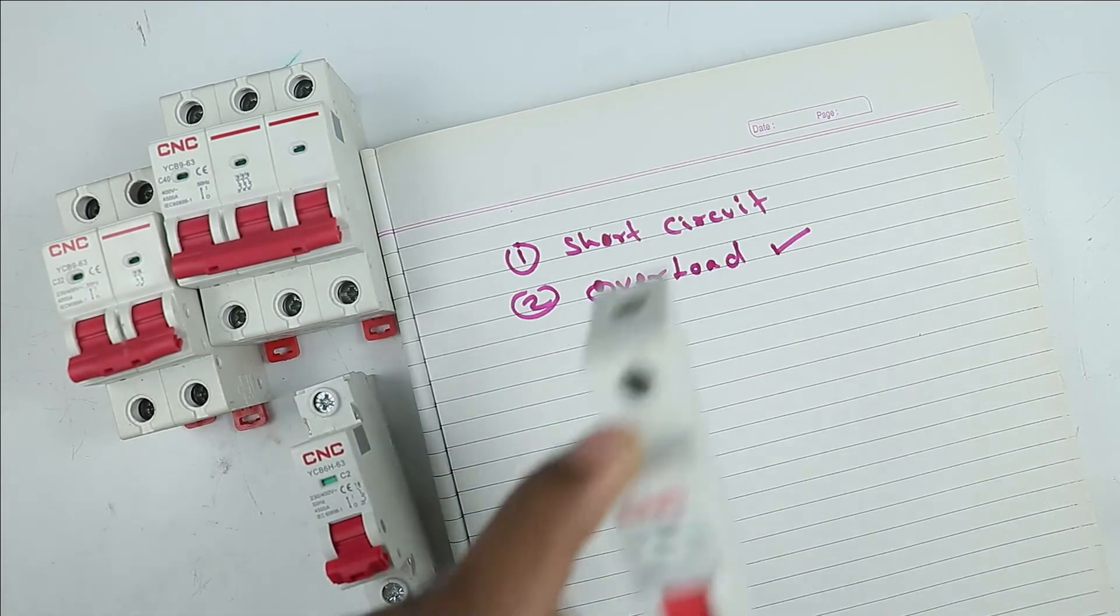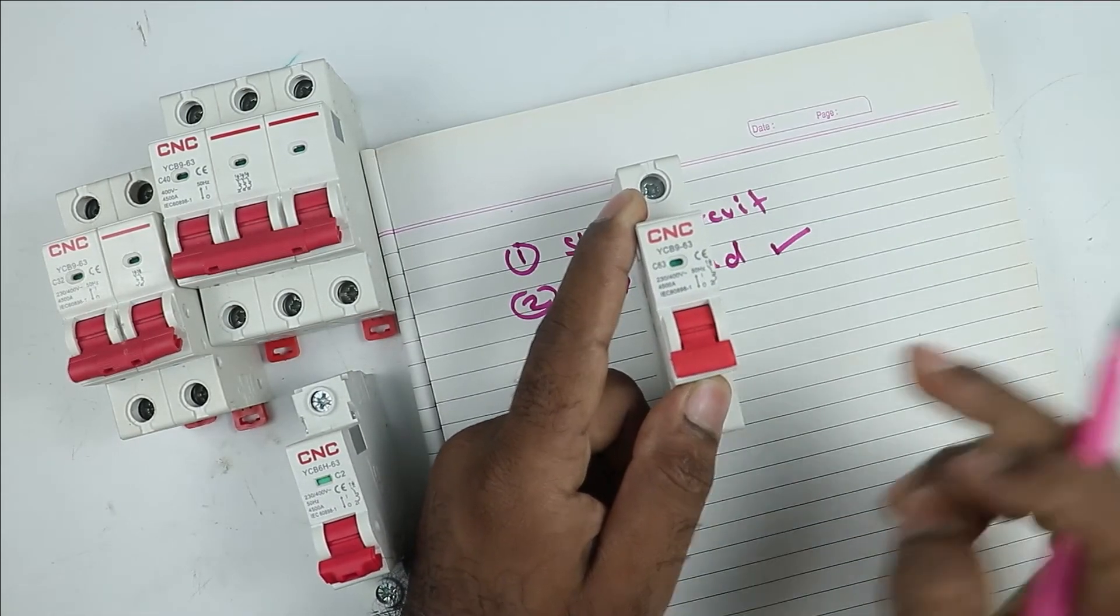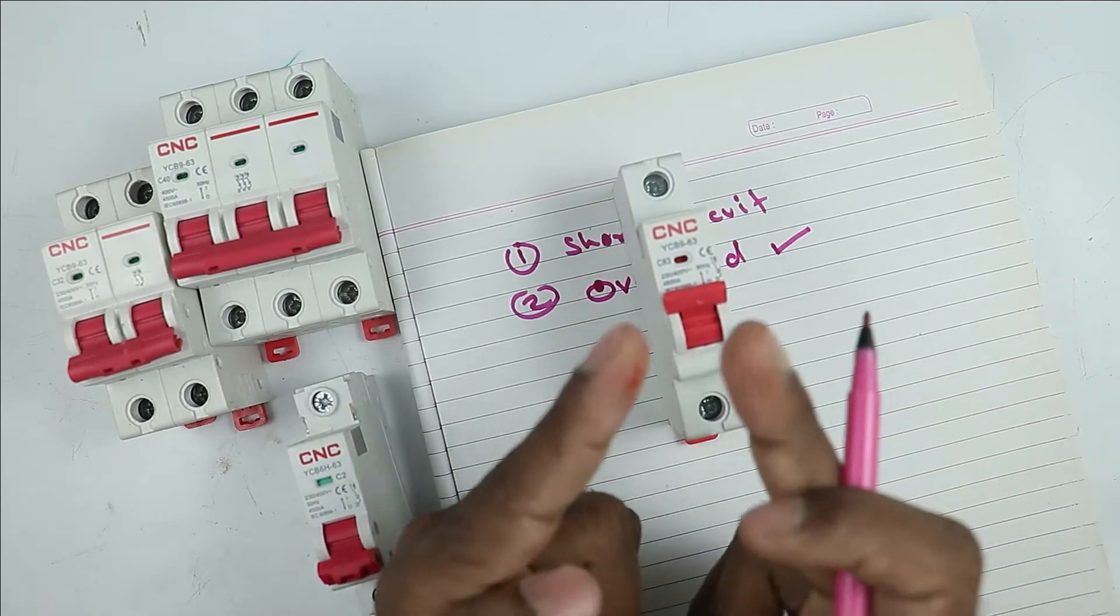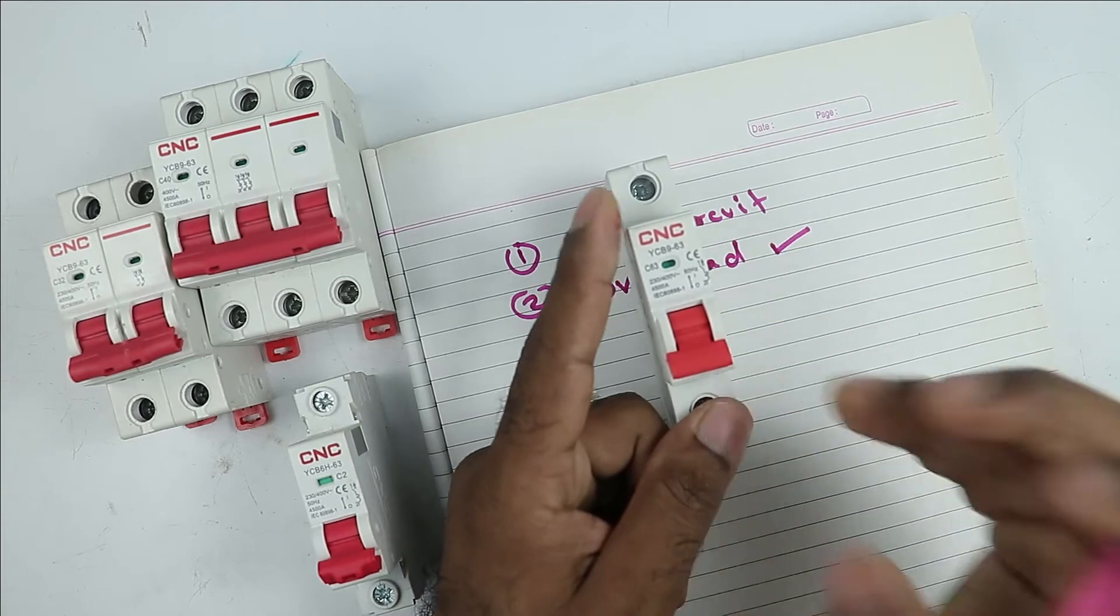It means if high current flows through this MCB, then this MCB will trip. Similarly, the wiring done in your home, if short circuit happens in wiring, then in this condition also MCB will trip.